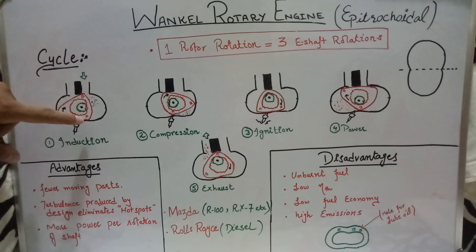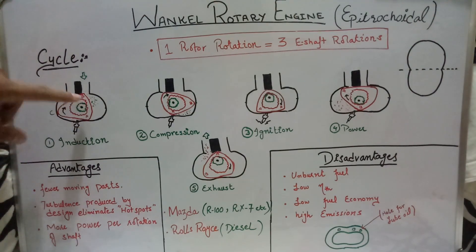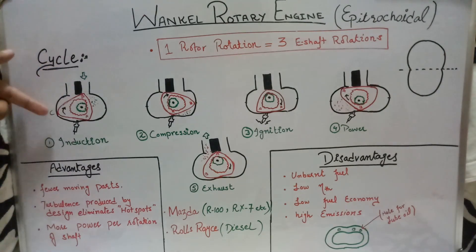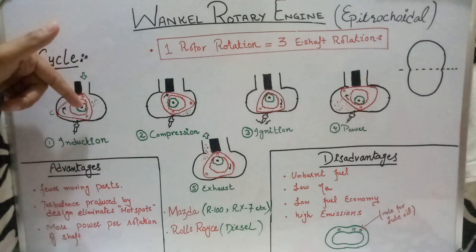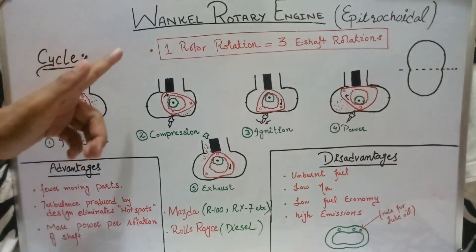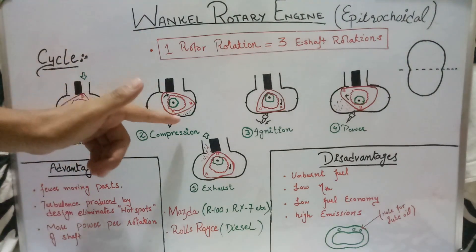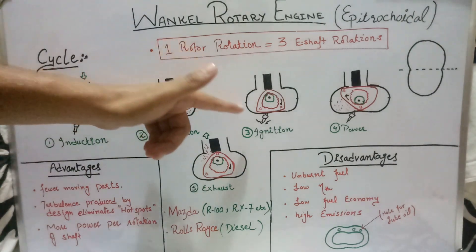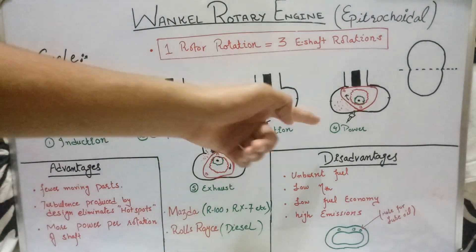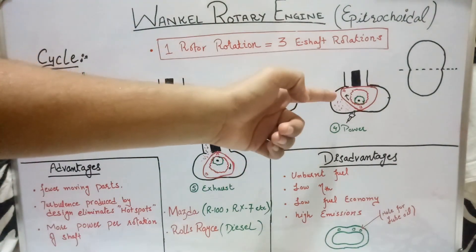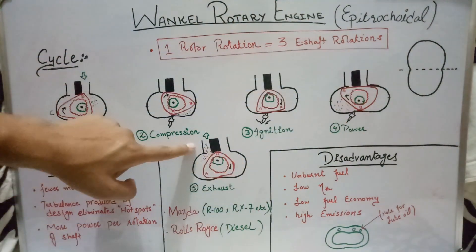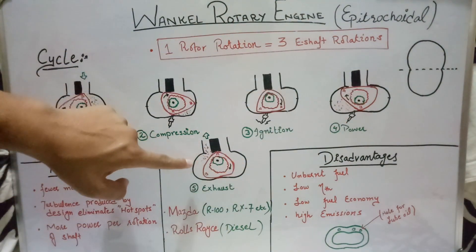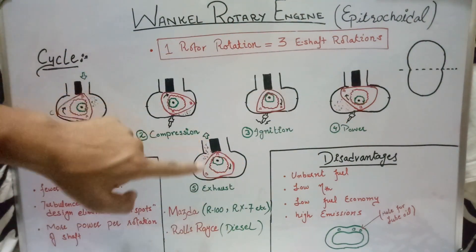Each side of the rotor — AB, BC, and CA — forms a combustion chamber. Taking side AB: first intake happens, then AB compresses the air-fuel mixture, then the spark plug ignites it and the power produced pushes the rotor in the clockwise direction.